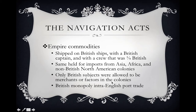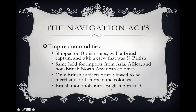Only British subjects were allowed to be merchants or factors. A factor was an individual who stayed in a foreign land to facilitate trade — a permanent trading post in that land. Under this rule, you wouldn't see Dutch, Spanish, or French factors in the British colonies — only British factors facilitating trade. This also had implications for the monopoly on intra-English port trade.